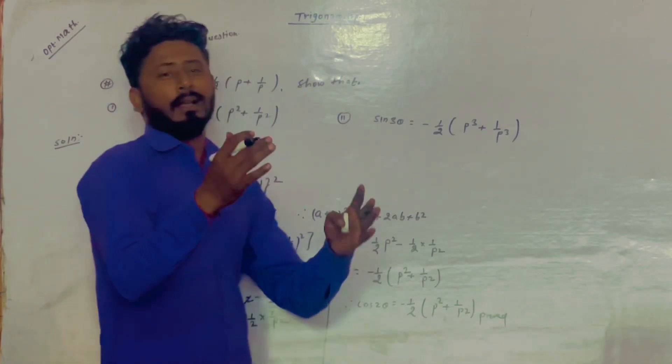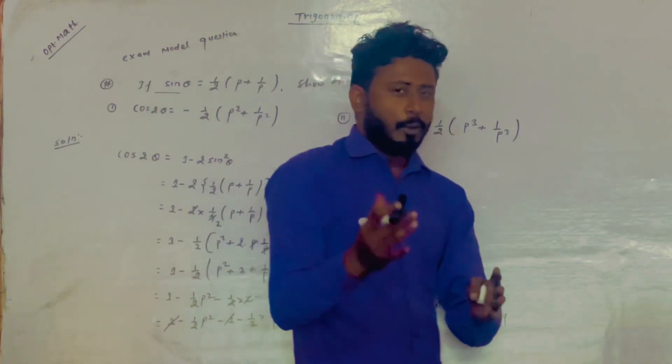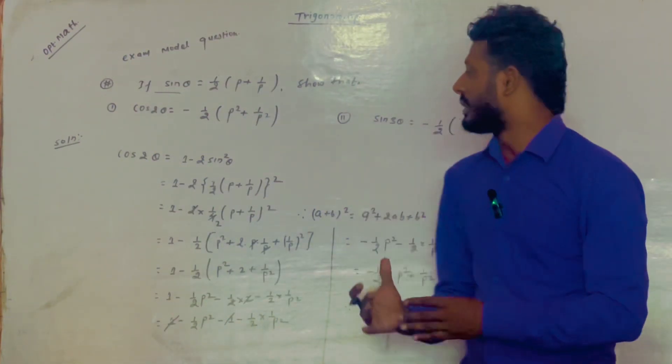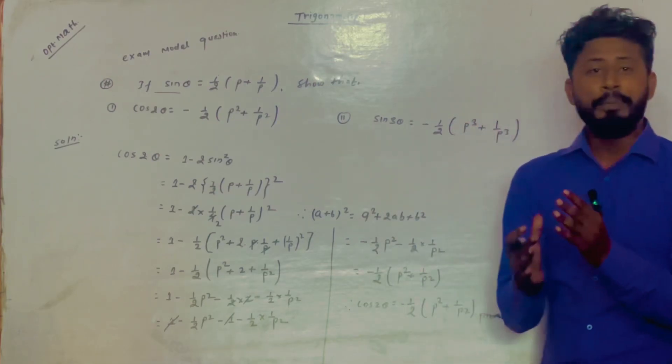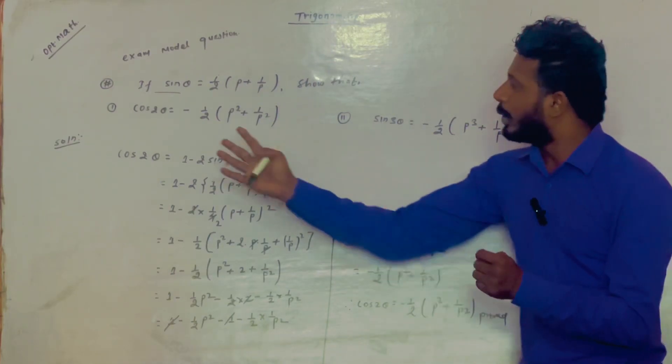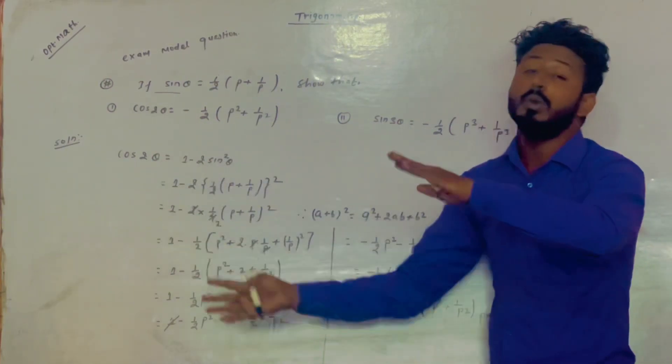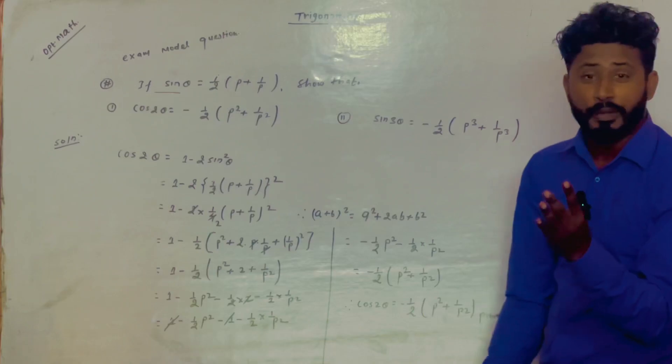Therefore, cos 2 theta equals minus 1 by 2, p squared plus 1 by p squared — proved. The solution is clear.